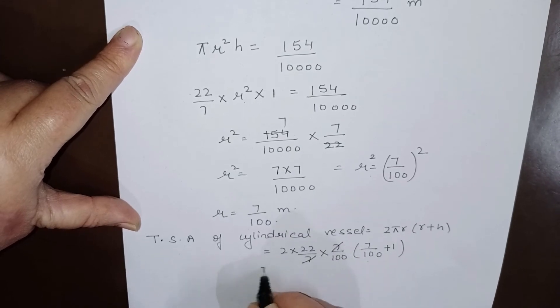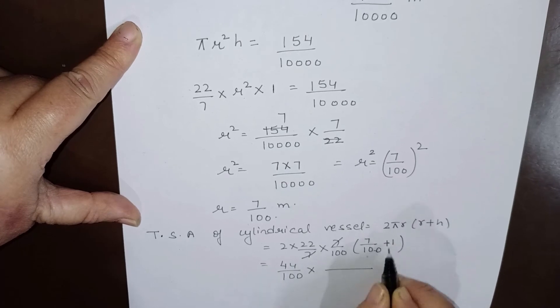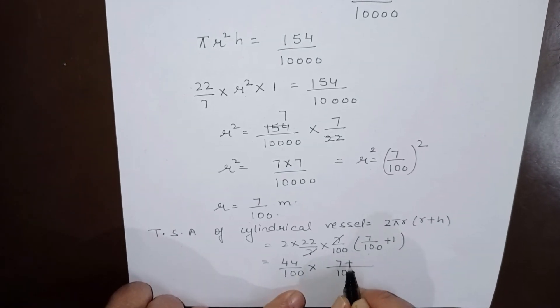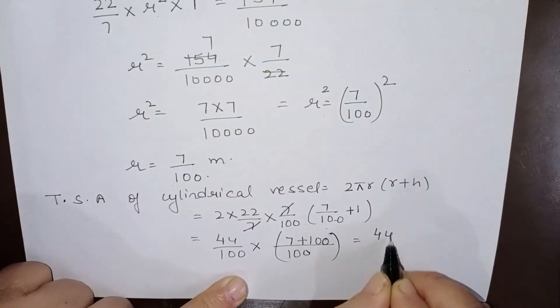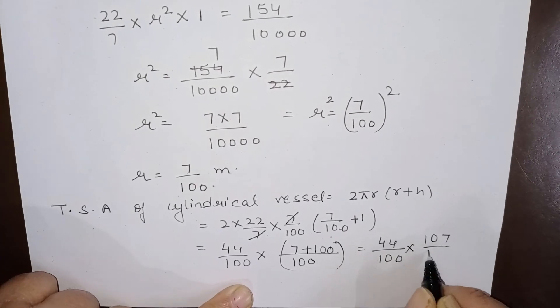Now 7 cancels with 7, so this is 44/100 multiplied by, now 100 is the LCM, so 7 plus 100. This equals 44/100 multiplied by 107/100.